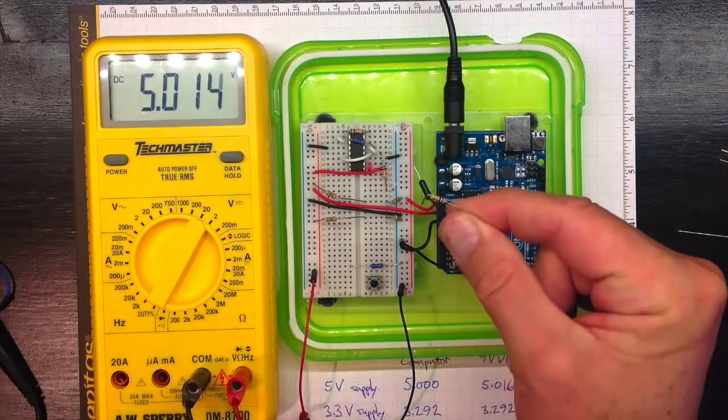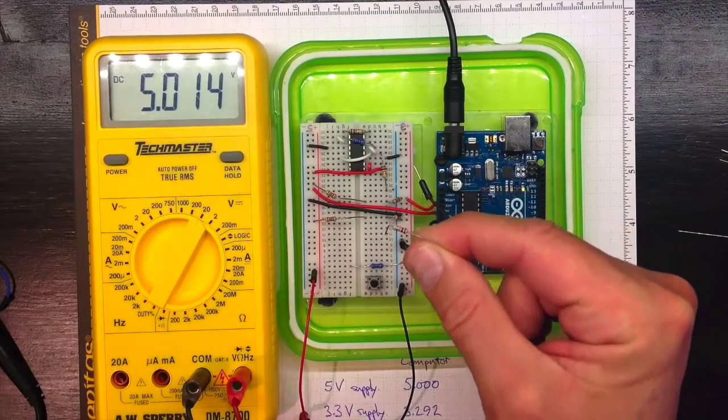And this resistor is our brown, black, orange again, that's 10 kilo ohms.